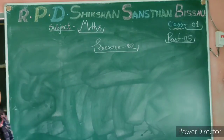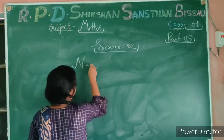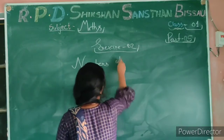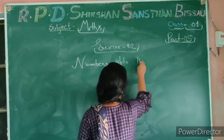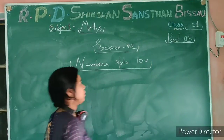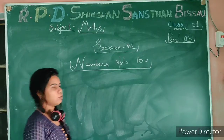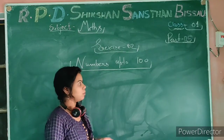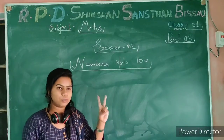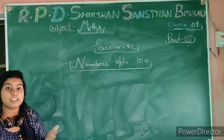Our exercise name is Numbers of 200. First of all, students, you know about counting like 1, 2, 3, 4, 5, 6, 7, 8, 9, 10.